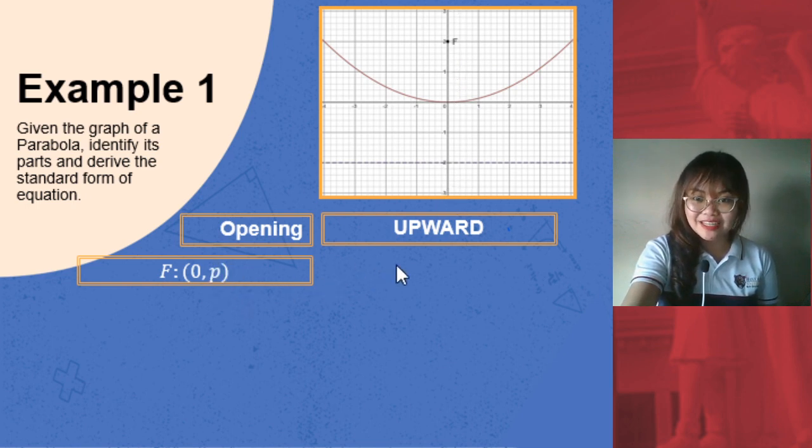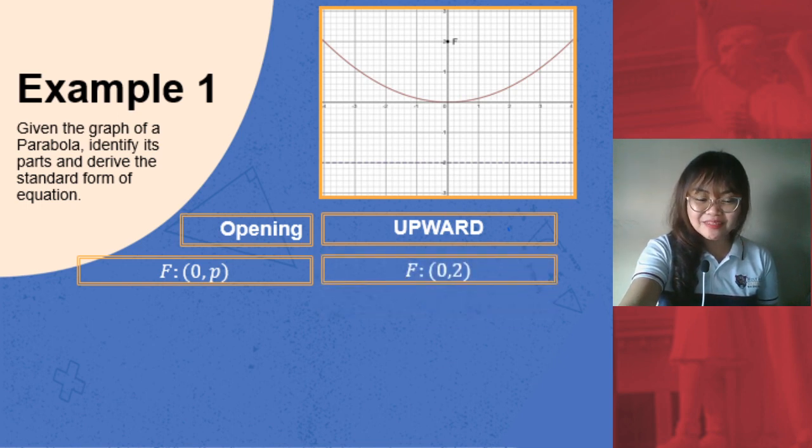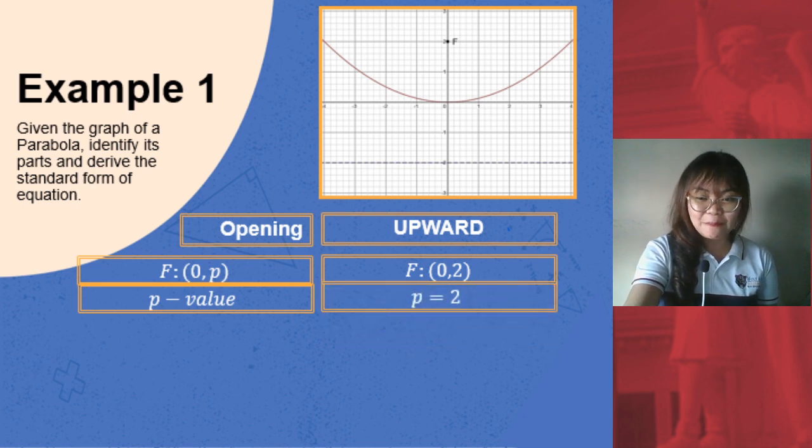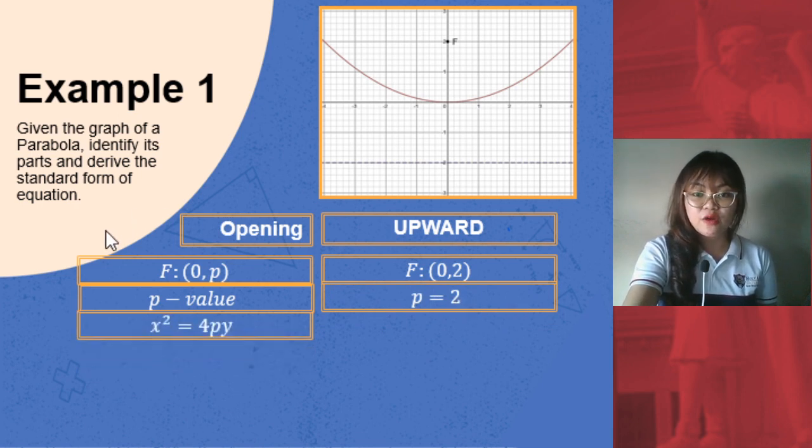Since it is found along the y-axis, we have a y-coordinate. Therefore our focus is at (0,2). From our focus we now have the p-value. The focus is at (0,2) and we know that the p-value is also this coordinate. Therefore our p-value here is 2, p equals 2. From our p-value we could now derive the standard form of equation given by x² = 4py.